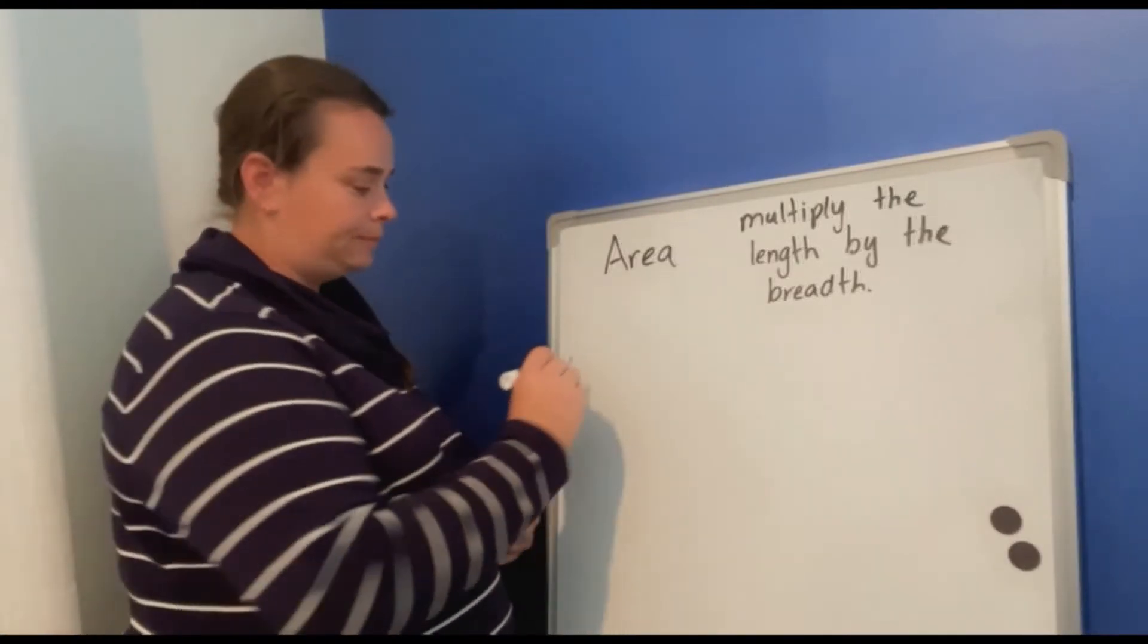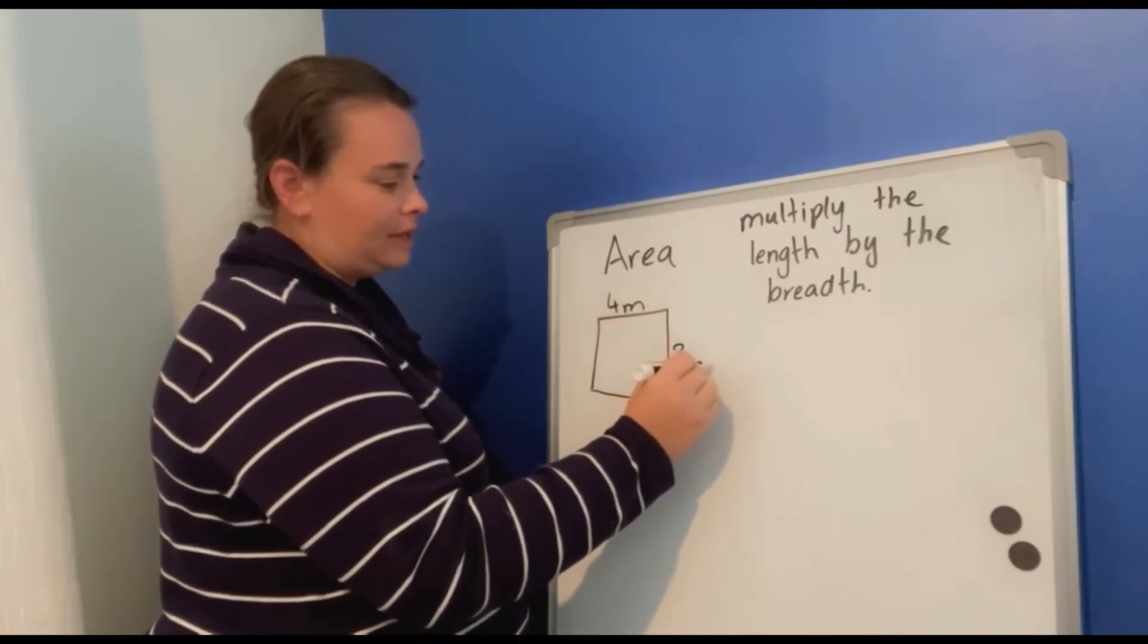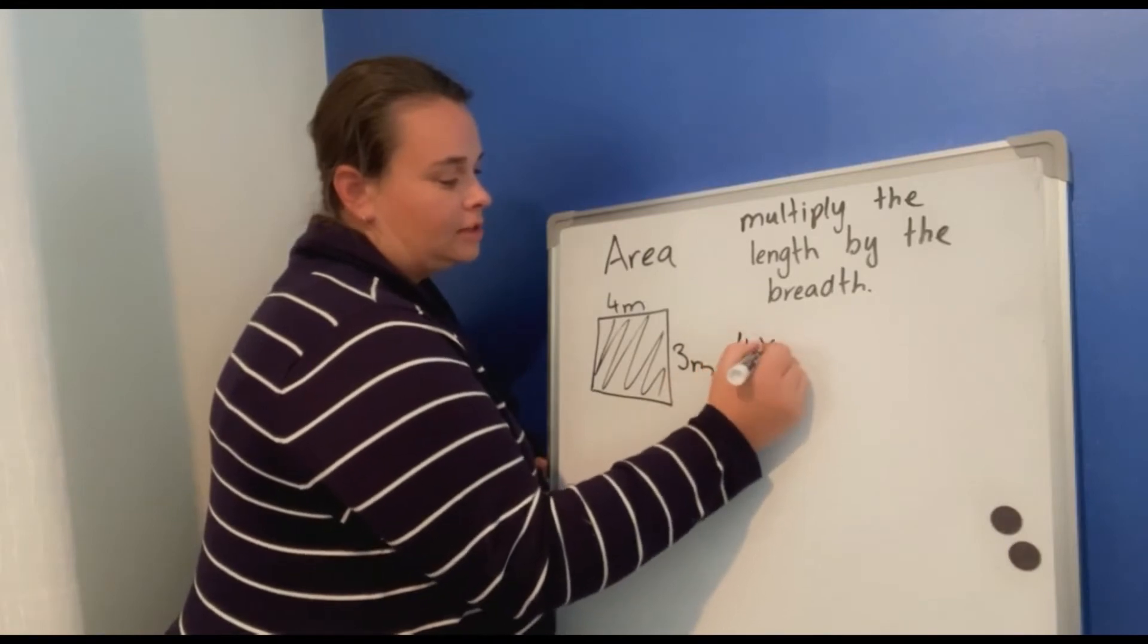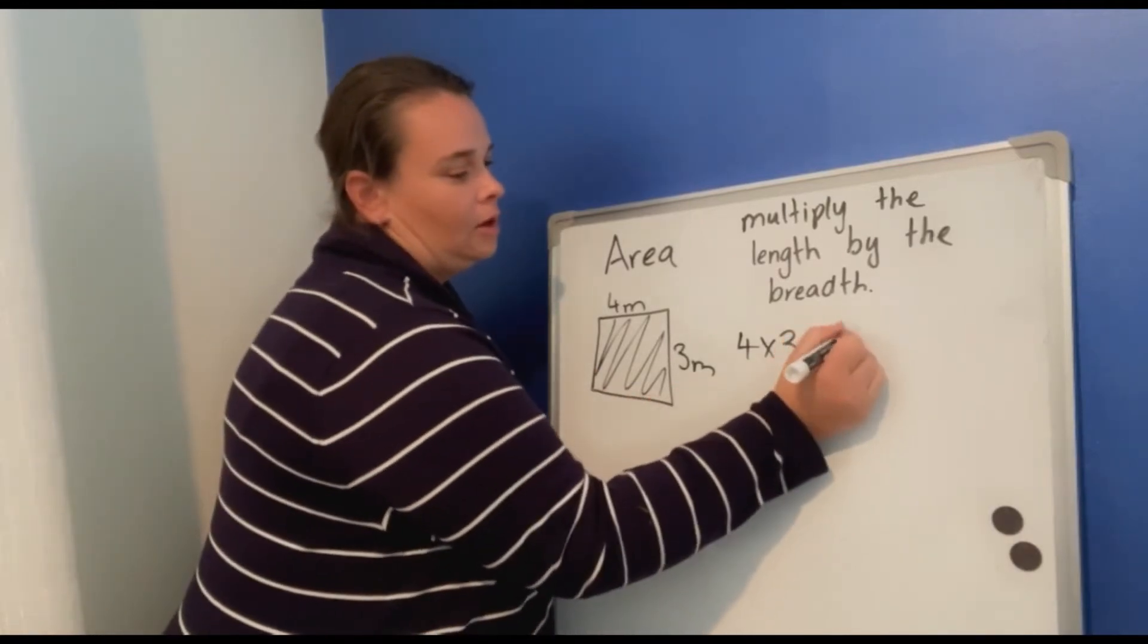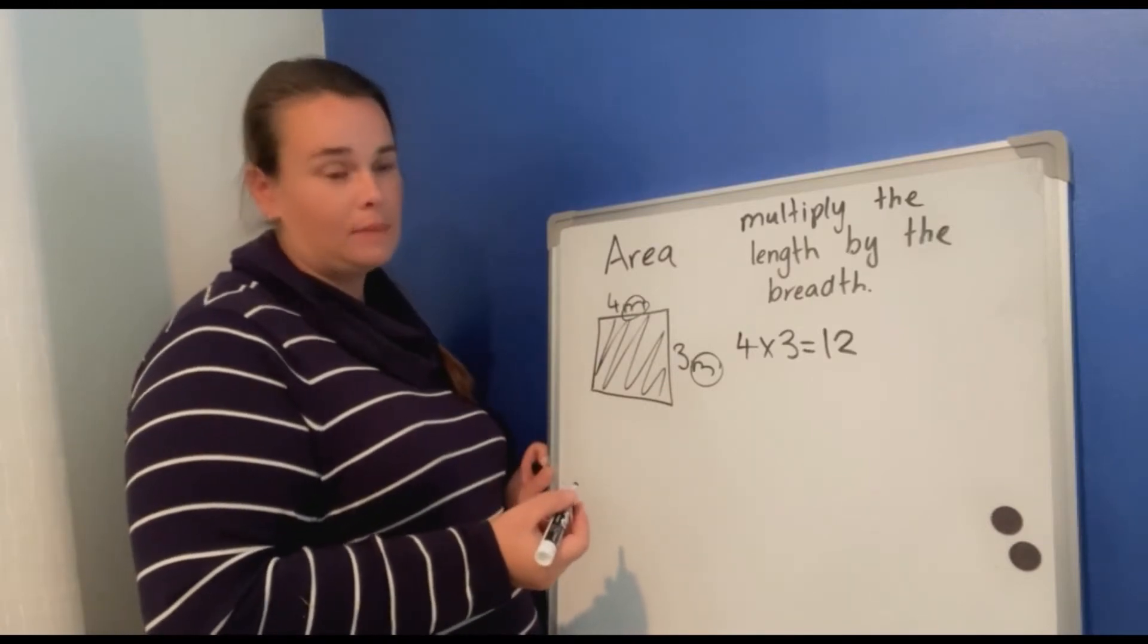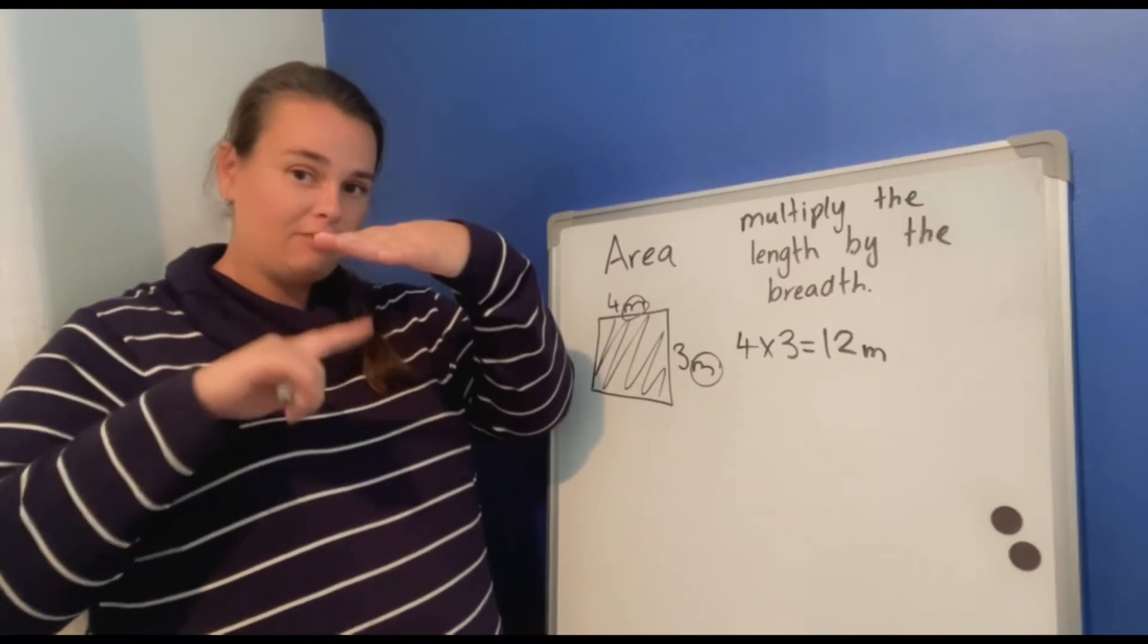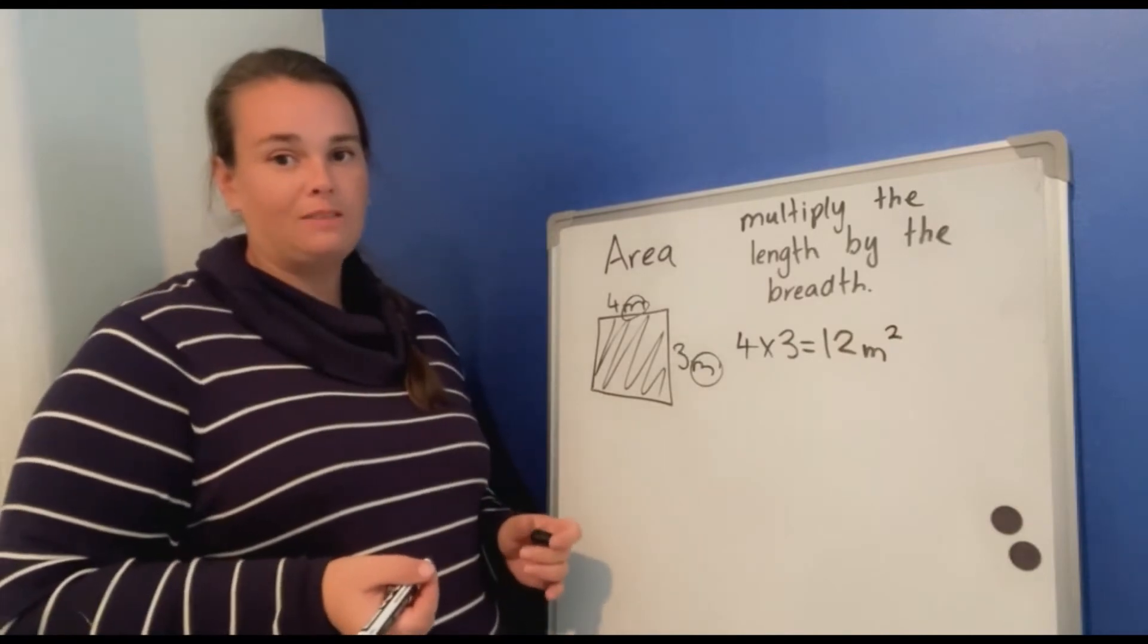Next one. Okay, four meters by three meters. How much is this inside area? Let's multiply it. Four times three is twelve. Twelve what? The m stands for meters. And because we've times the length by the breadth to find the whole inside area of our shape, that means we need to put the small two on top to show that we have squared it.